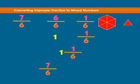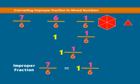Hence, 7 sixths is the same as 1 and 1 sixth. 7 sixths is the improper fraction and 1 and 1 sixth is the mixed number.